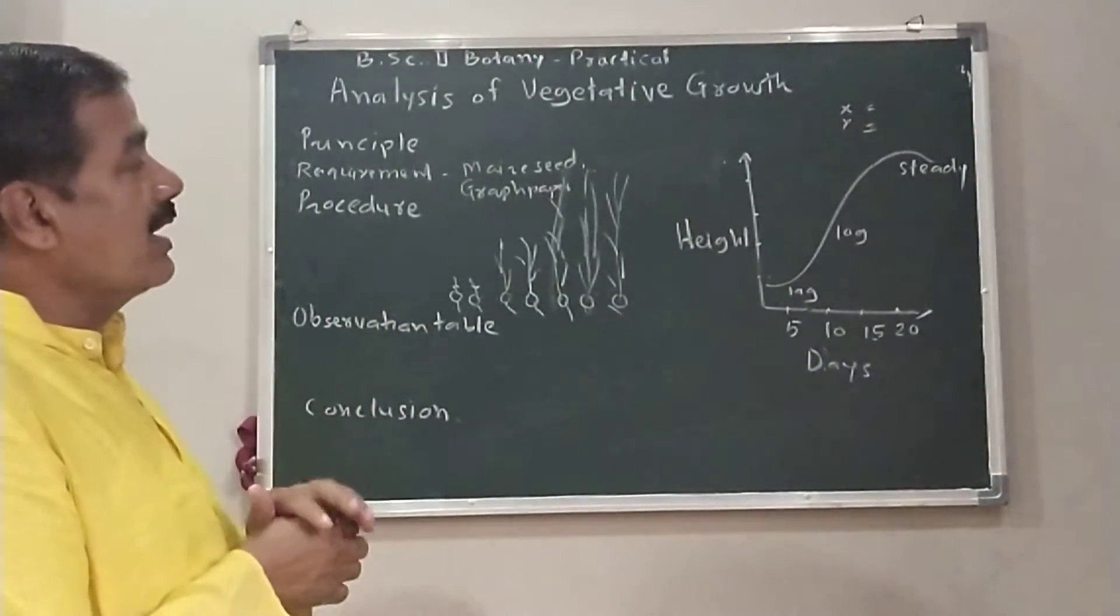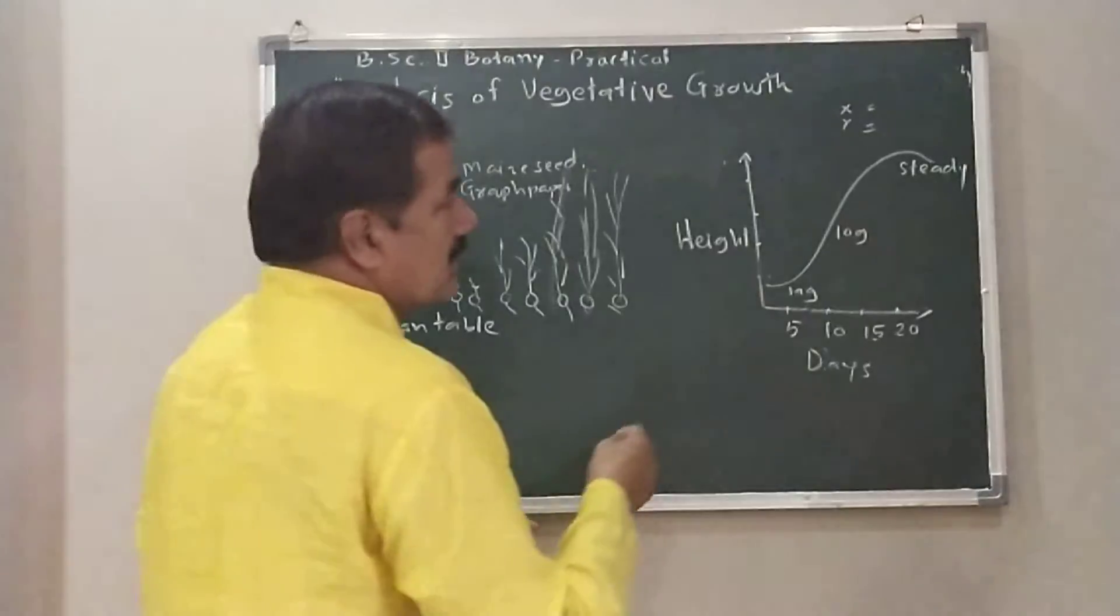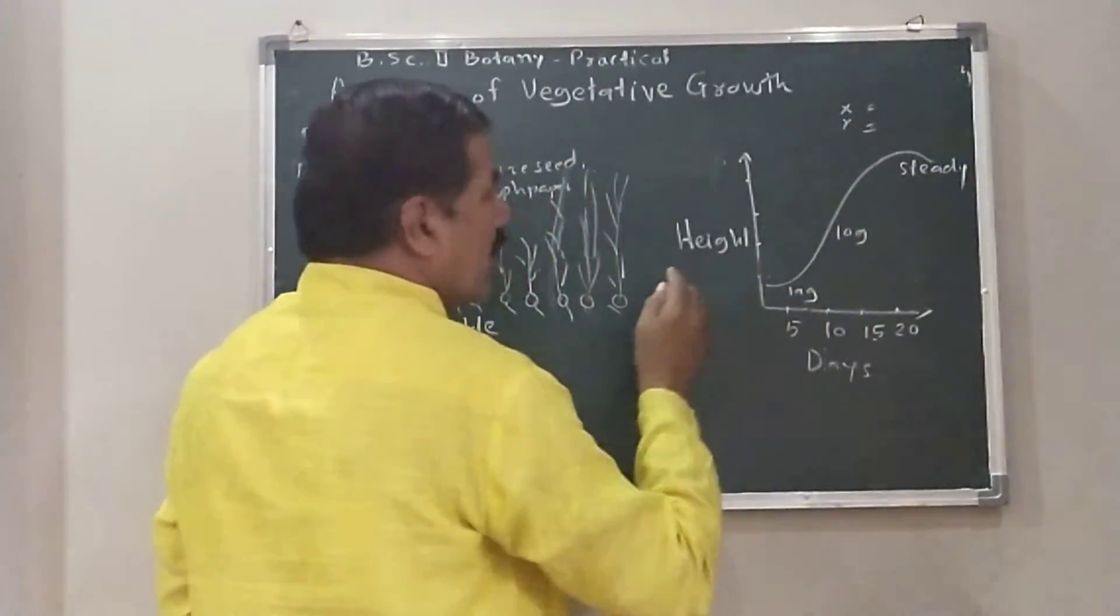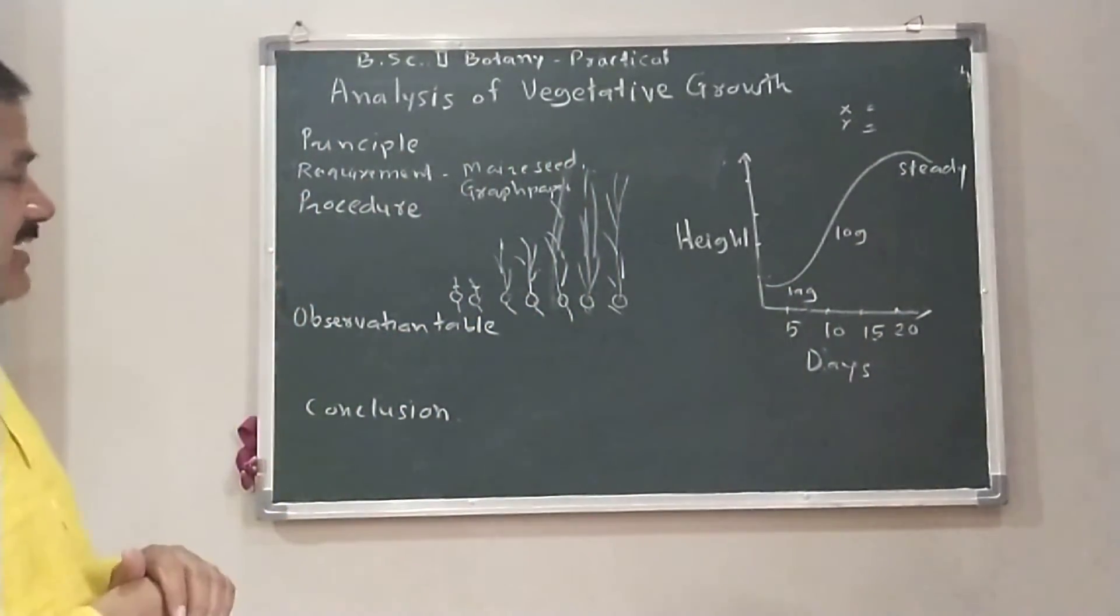By putting the values into the graph, the graph shows the sigmoid or S-curve.